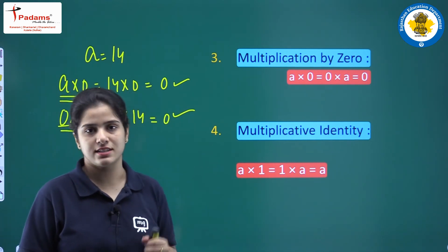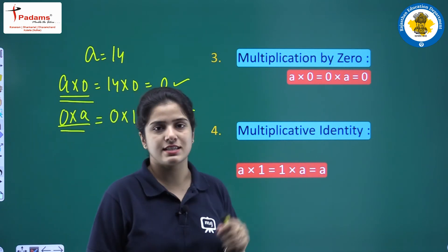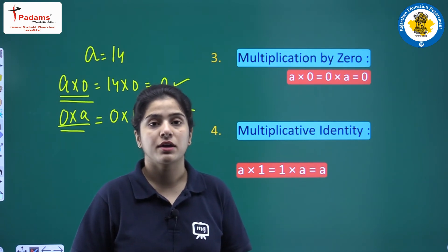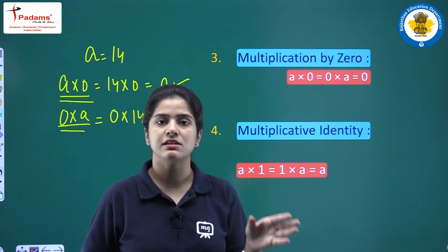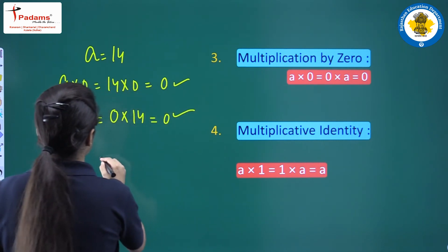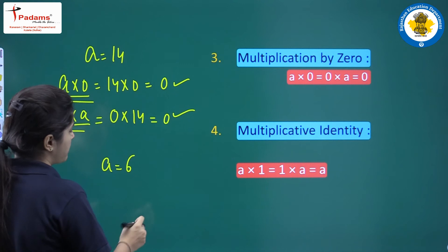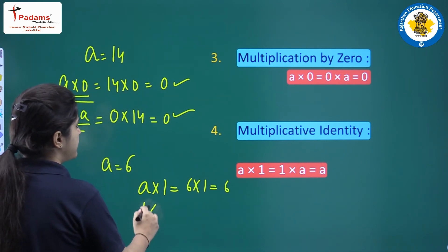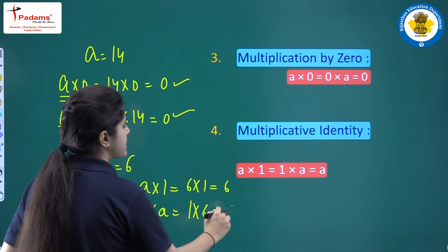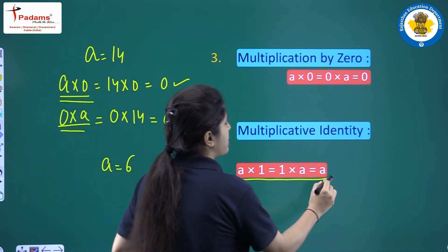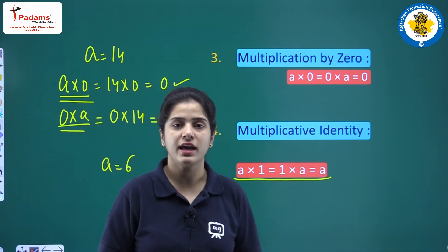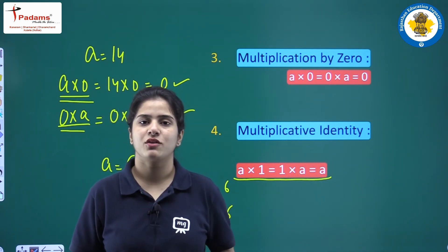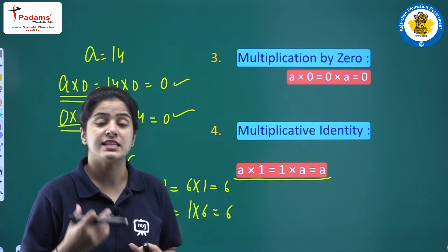Next is the multiplicative identity. When any integer is multiplied by 1, the answer is the integer itself — so 1 is the multiplicative identity. For example, if A = 6, then 6×1 = 6 and 1×6 = 6. So A×1 = 1×A = A for any integer A.